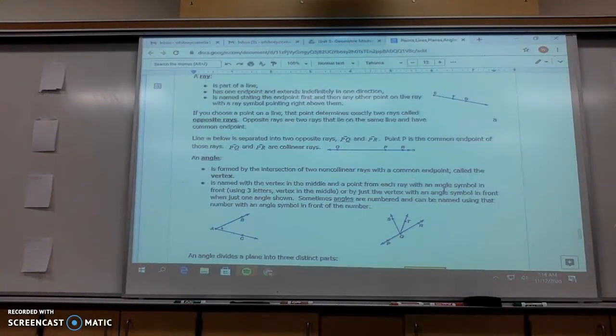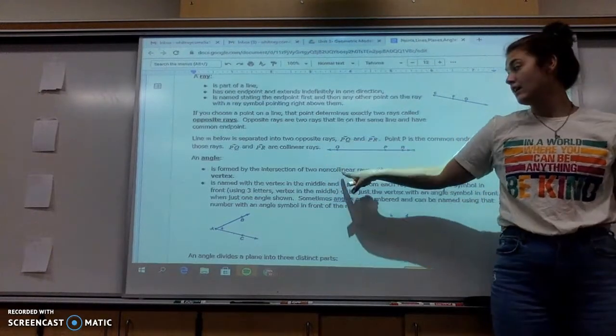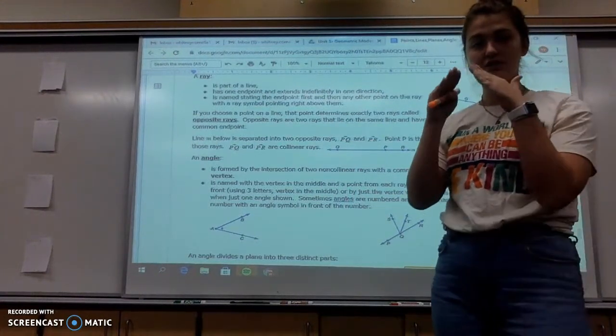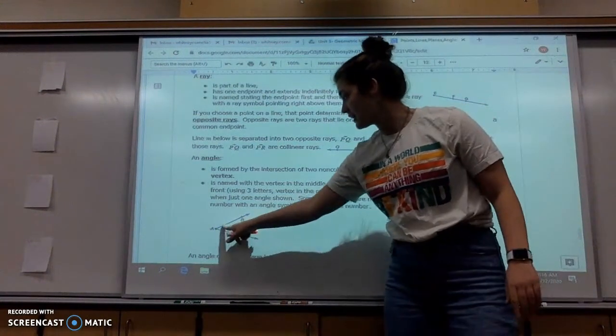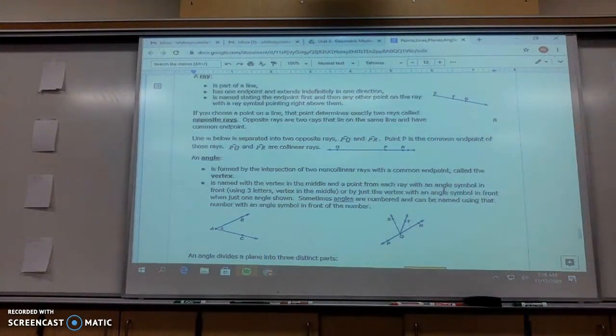An angle is formed with the intersection of non-collinear rays, meaning they are not like opposite rays where they make a line. They're non-collinear and they meet at a vertex. So where these two rays meet, it's called a vertex. The name of a vertex in the middle of the point for each angle symbol using three letters with the vertex in the middle.